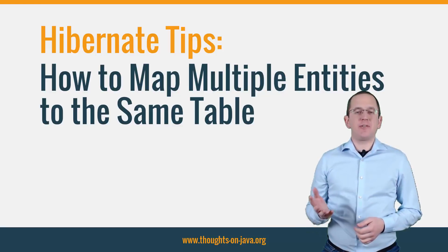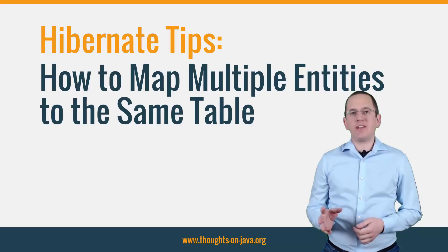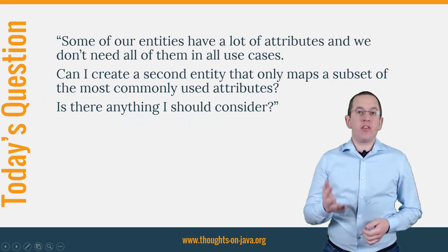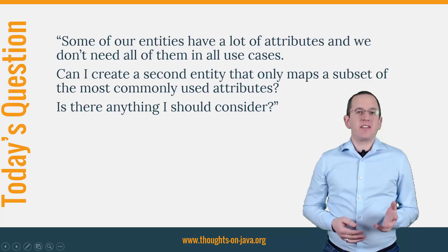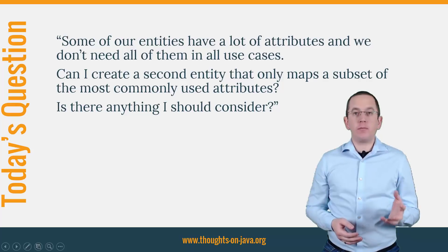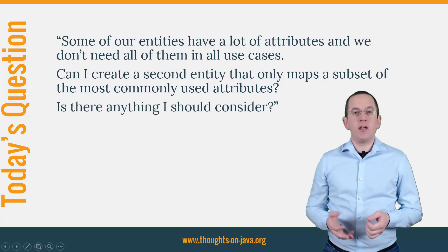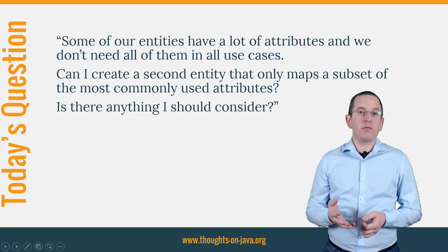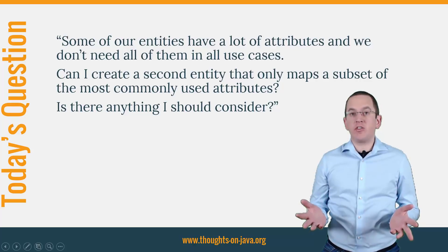I'm Torben Janssen from thoughts-on-java.org with a new Hibernate Tip. One of the readers of my blog asked me this question: some of our entities have a lot of attributes and we don't need all of them in all use cases. Can I create a second entity that only maps a subset of the most commonly used attributes? Is there anything I should consider?